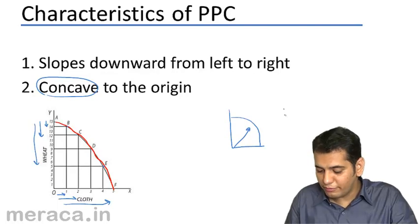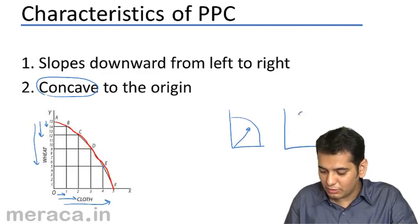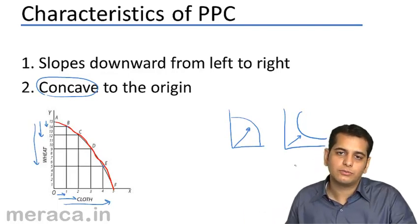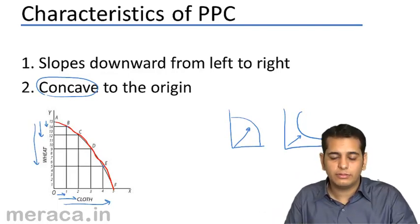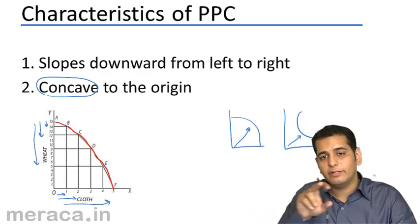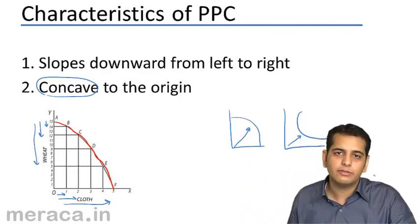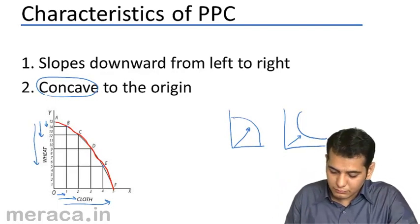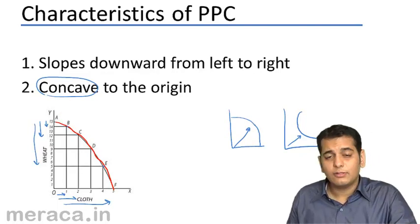And what is convex? Convex means a curve which comes closer to the origin as it moves down. But in the case of PPC, it moves farther. So, it becomes concave. It takes a shape of concave lens.